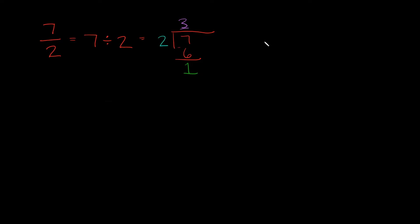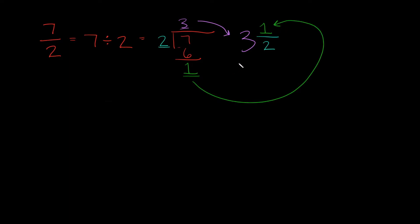The quotient is going to be the big number, also known as your whole number in your mixed number. This remainder is going to be your numerator, and that's going to be over this divisor, which is going to be your denominator. Your quotient is the big number, your remainder goes in the numerator, and whatever number you had in the denominator here is also going to be the same number you put in the denominator here — that never changes. So that's a really easy way to check your answer, because whatever denominator you have here should be the exact same denominator you have here.